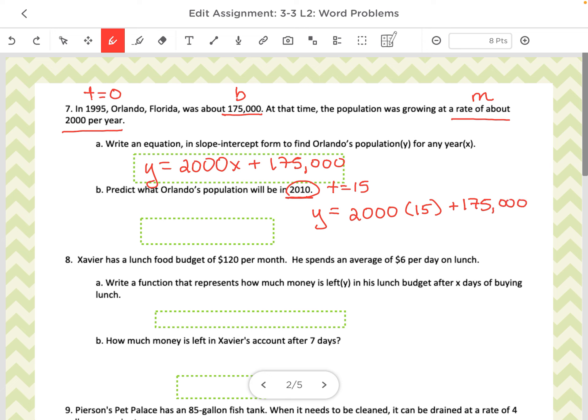And this is what you're going to punch out on your calculator. And if you do that, you get 205,000. So it makes sense. You started with 175,000 people. It's going up every year. So then 15 years later, you have 205,000 people.